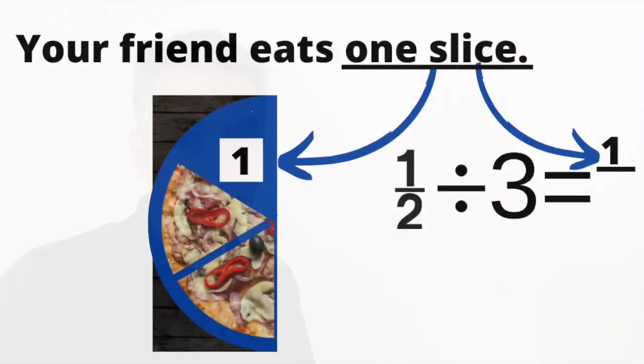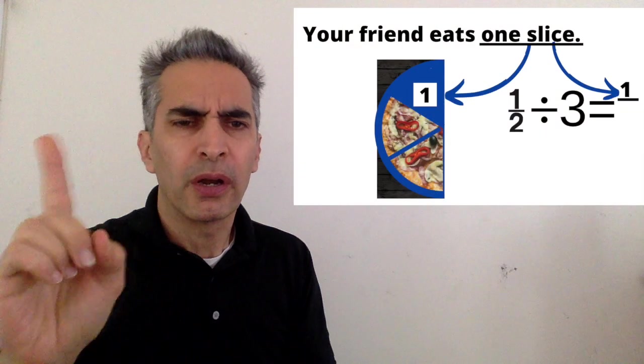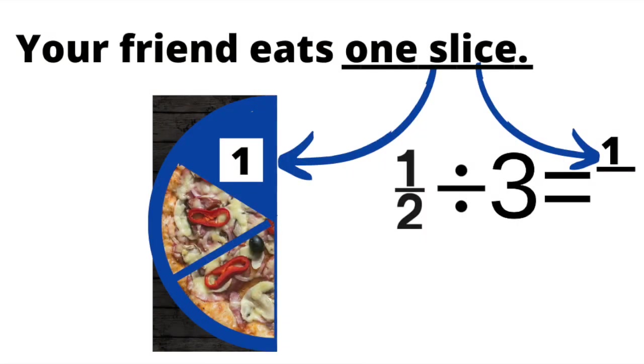Your friend eats one slice right there. Where do you put the one? Right there in the numerator.